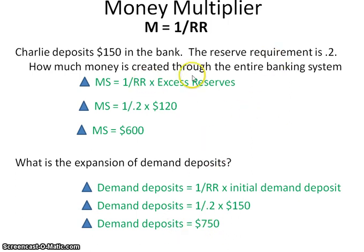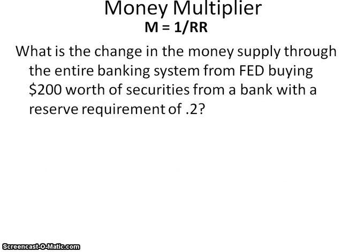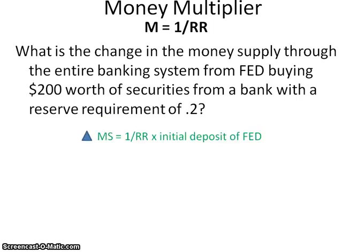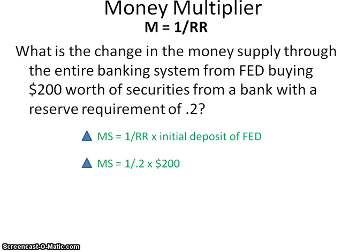Notice the difference between the two questions: 'How much money is created through the entire banking system?' versus 'What is the expansion of demand deposits?' For the third question type involving the Fed — for example, the Fed buying $200 worth of securities from a bank with a reserve requirement of 0.2 — this was an asset within the bank, not money already circulating. So you use 1 over the reserve requirement times the full $200, giving a change in the money supply of $1,000.